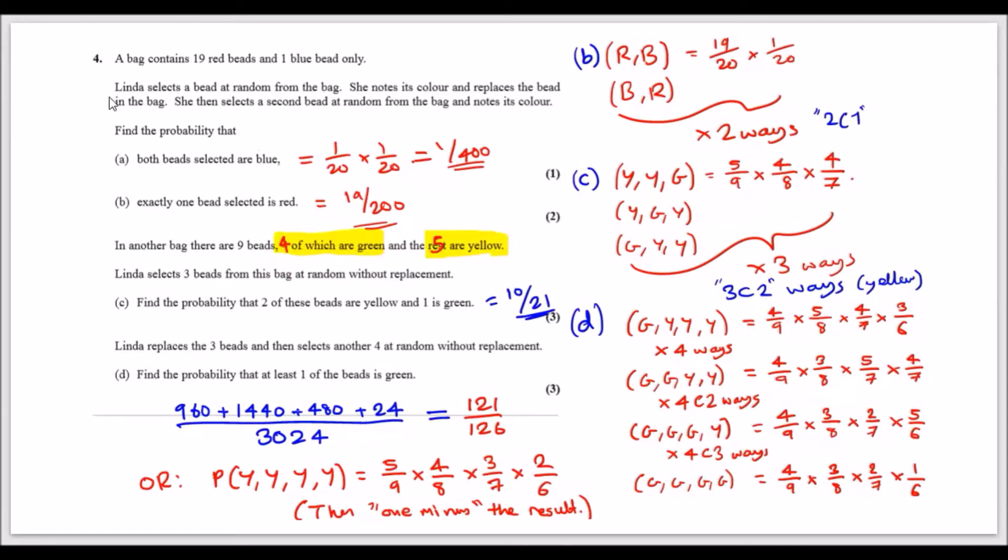So let's do part A. Find the probability that both beads selected are blue. This is quite standard. You've got one blue bead out of 20, so one over 20 for the first bead. You put it back in the bag, so the second is one over 20 again. So one over 20 times one over 20 equals one over 400.